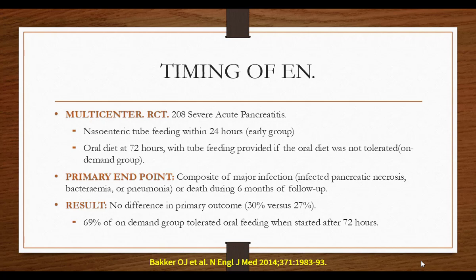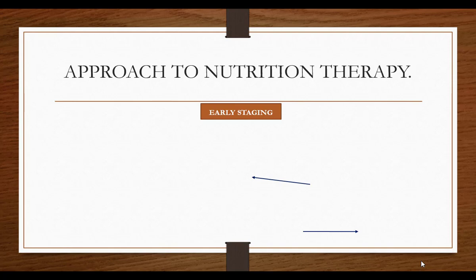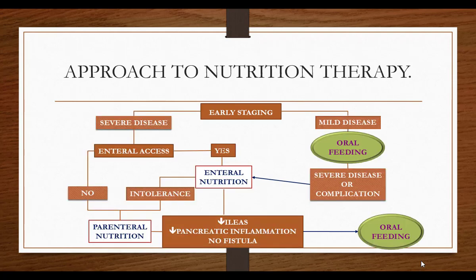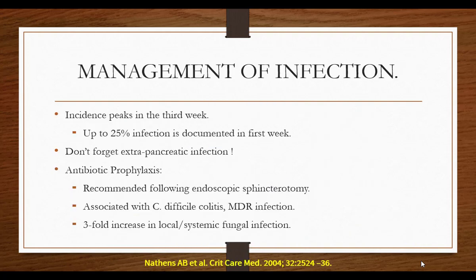In summary for nutrition: do early staging. If mild disease, start oral feeding. If the patient develops severe disease or complications, consider enteral nutrition. If severe disease — think of enteral access. If more than 72 hours and enteral access is available, start enteral feeding. If there is intolerance to enteral feeding or no enteral access, continue with parenteral nutrition. Once ileus settles, pancreatic inflammation resolves, and there is no fistula, the patient can be shifted to oral feeding.